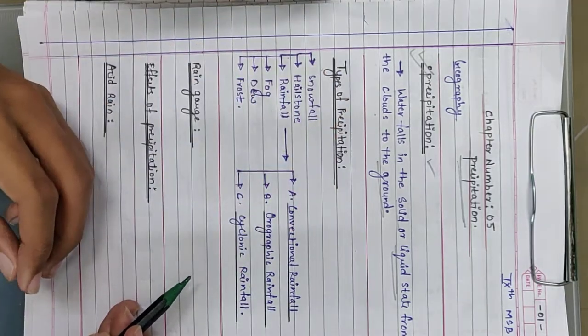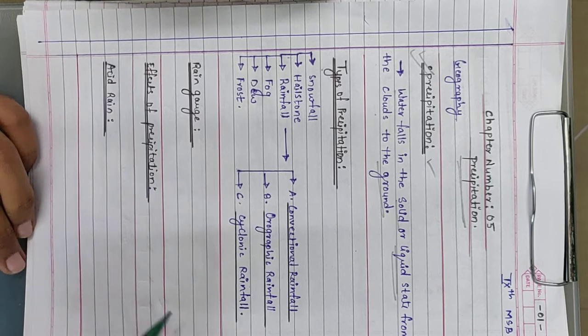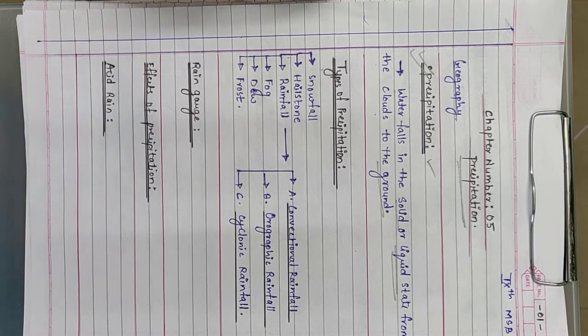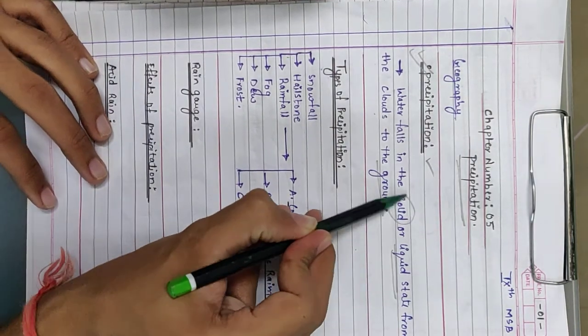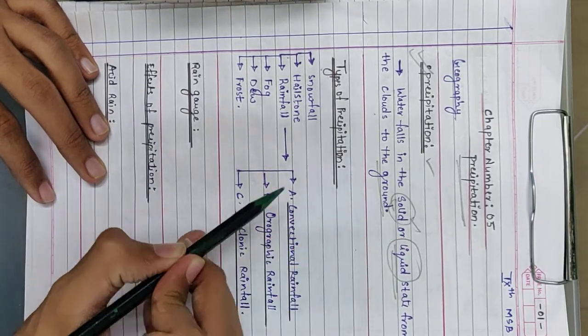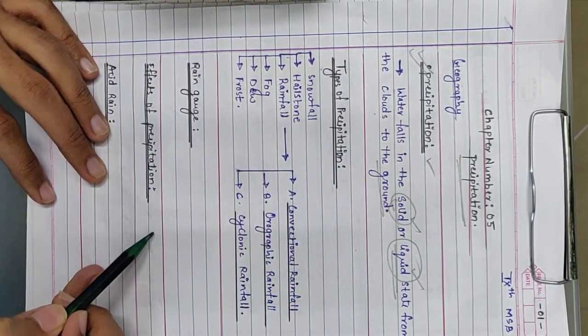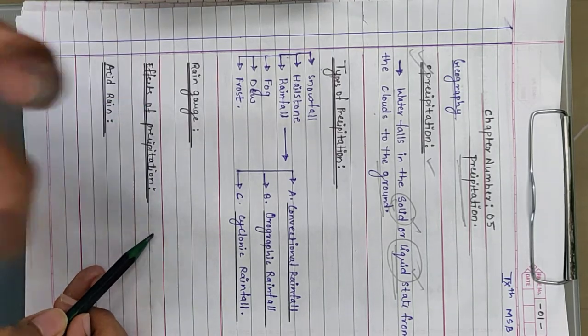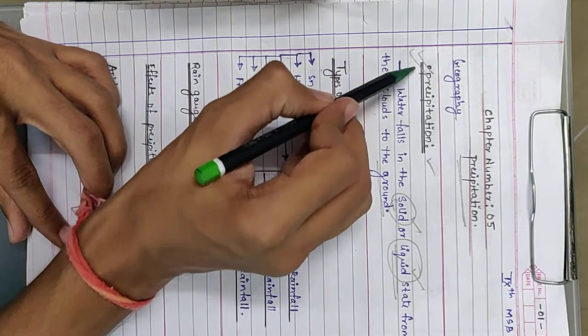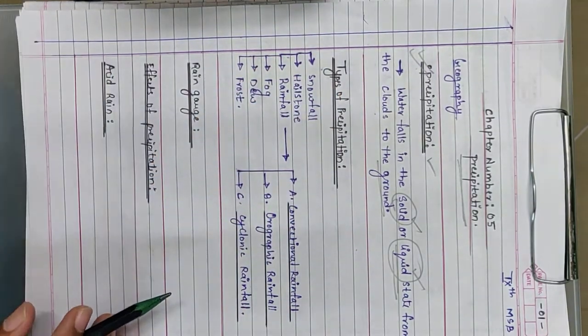According to your Maharashtra State Book, 9th Standard, precipitation is when waterfall occurs in the form of solid or liquid. When water falls from higher atmospheric levels, from clouds towards the earth surface or ground in solid or liquid state, that becomes precipitation.